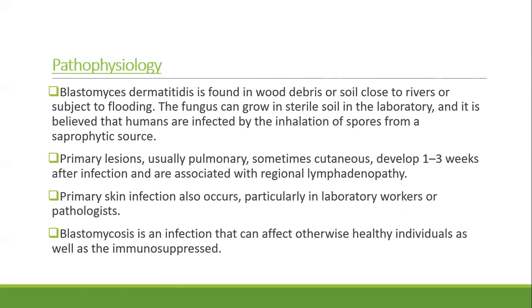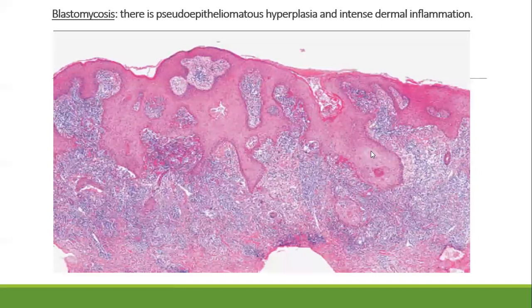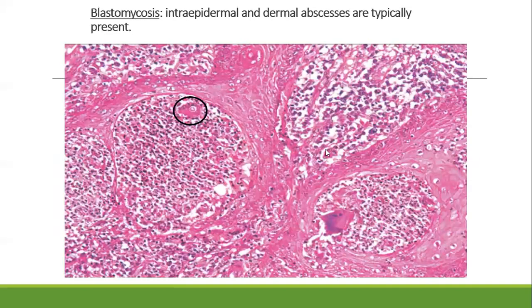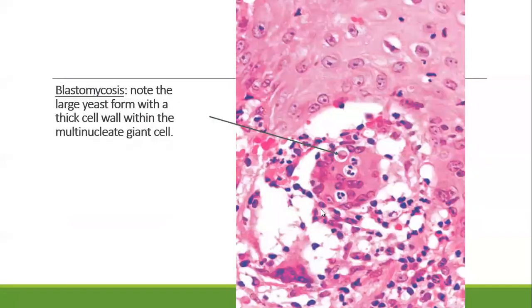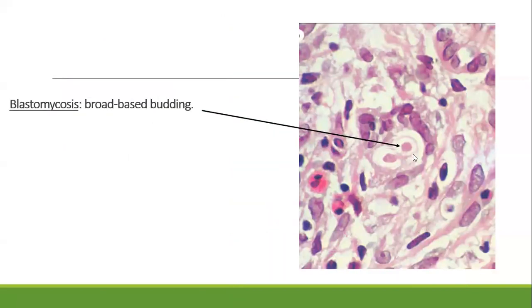Blastomycosis can affect otherwise healthy individuals as well as immunosuppressed patients. On histopathology, there is pseudoepitheliomatous hyperplasia and intense dermal inflammation with an intraepidermal abscess, multiple intraepidermal abscesses, granulomatous inflammation, and giant cells. Blastomyces appears as large yeast forms with a thick cell wall within multi-nucleated giant cells; there is broad-based budding seen within the cell.